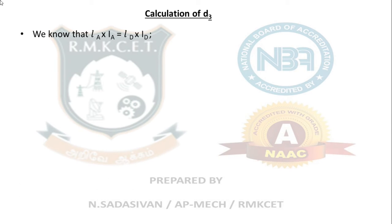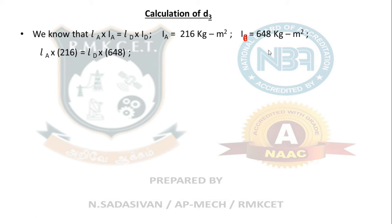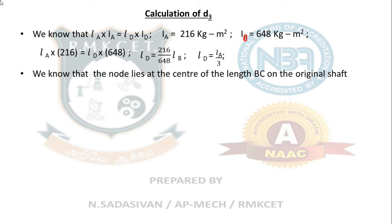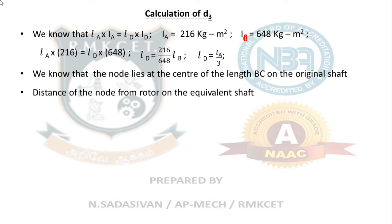For the nodal location, we use the condition La × Ia = Ld × Id, where Ia is 216 and Id is 648. This gives La × 216 = Ld × 648, so the ratio La/Ld = 3, meaning Ld = La/3. The nodal location on the equivalent shaft from flywheel D will be 3 times greater than from flywheel A. It is also mentioned in the question that the node lies at the midpoint of section BC of the original shaft.